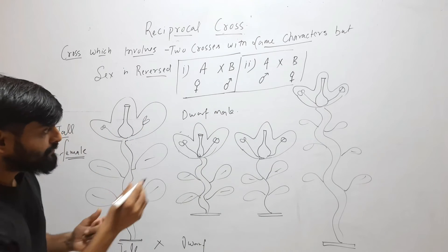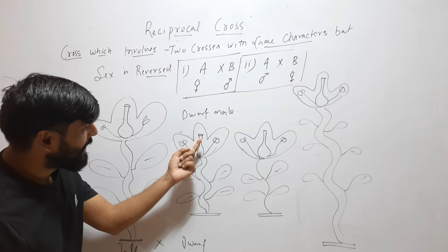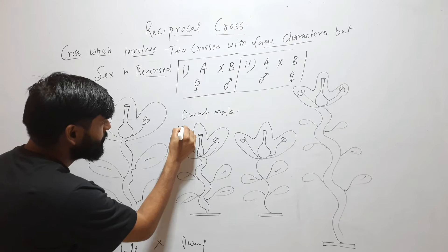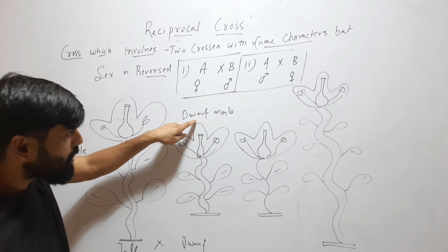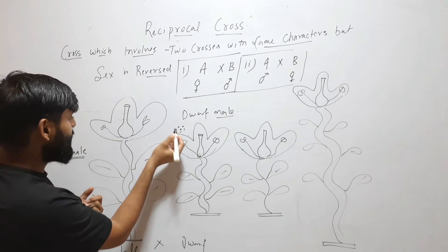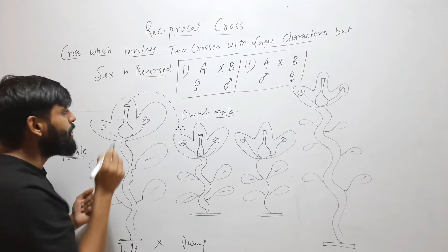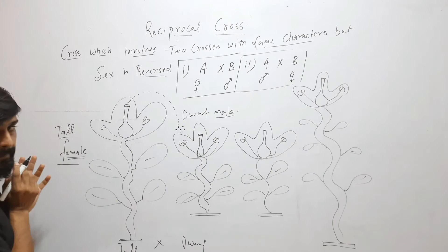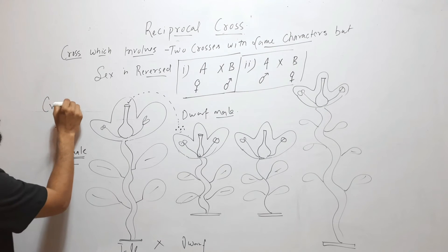Here I will take pollens from the anthers of the dwarf plant, because I am using the dwarf plant as a male. We know that these are anthers and this is the female reproductive part called the gynoecium. So I will take pollen from the dwarf plant and put it on the stigma of the tall plant, because I am using the tall plant as a female. This is cross number one.